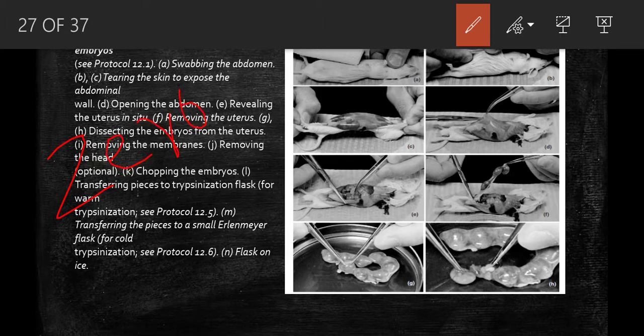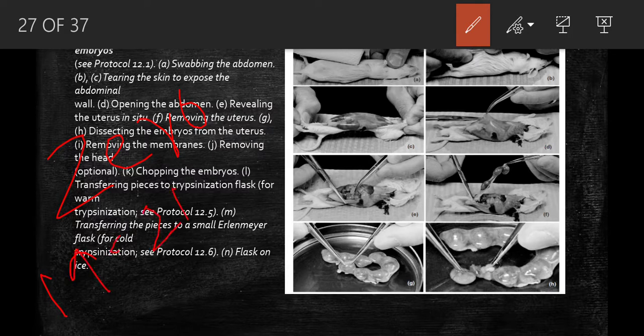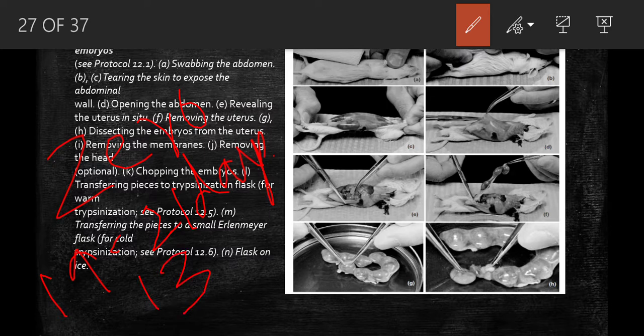The plug date is dated as zero, and from that day the development of the embryo is timed. Full term development takes about 19 to 21 days.